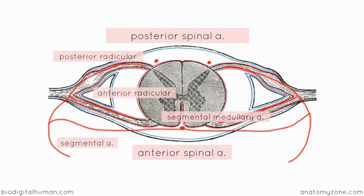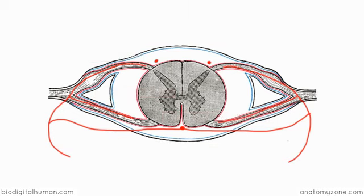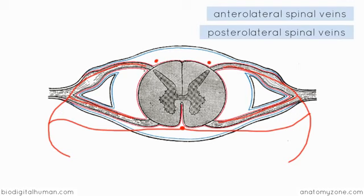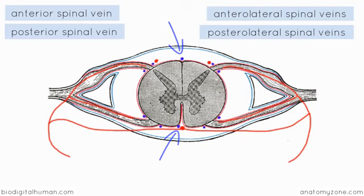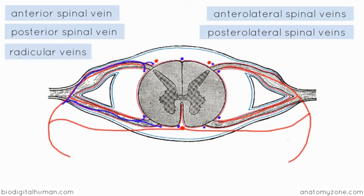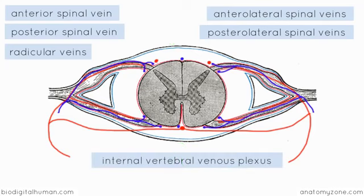The venous drainage system has a similar structure. You've got longitudinal veins running down the length of the spinal cord: anterolateral and posterolateral veins sitting either side of the dorsal and ventral nerve roots, plus an anterior and a posterior spinal vein. All these veins drain via anterior and posterior radicular veins, which then drain to a venous plexus sitting in the extradural space — known as the internal vertebral venous plexus, situated outside the dura mater.